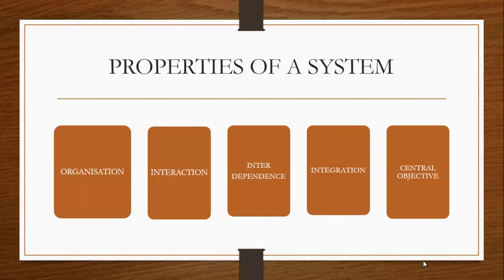Another property of a system is interaction. A system comprises different components, and these components must interact and operate with each other. For instance, in an organization you have different segments: purchasing, supply, store, and so on. Each of these components must work for the good of the organization to ensure that the organization achieves its goal.